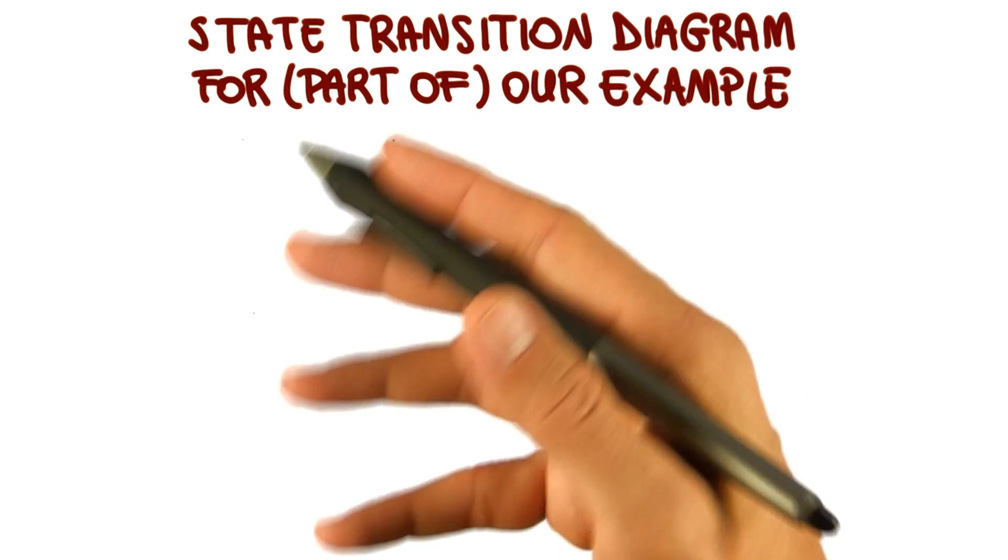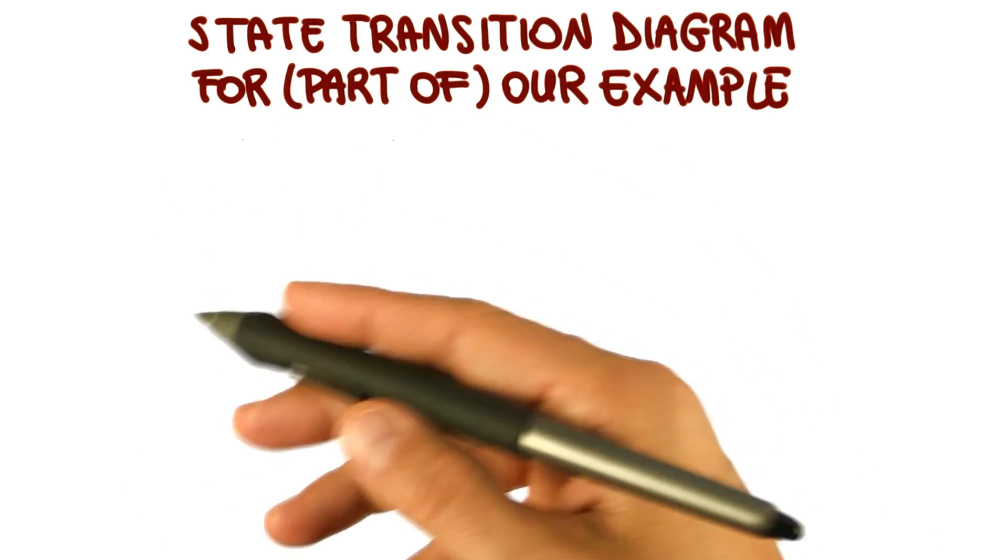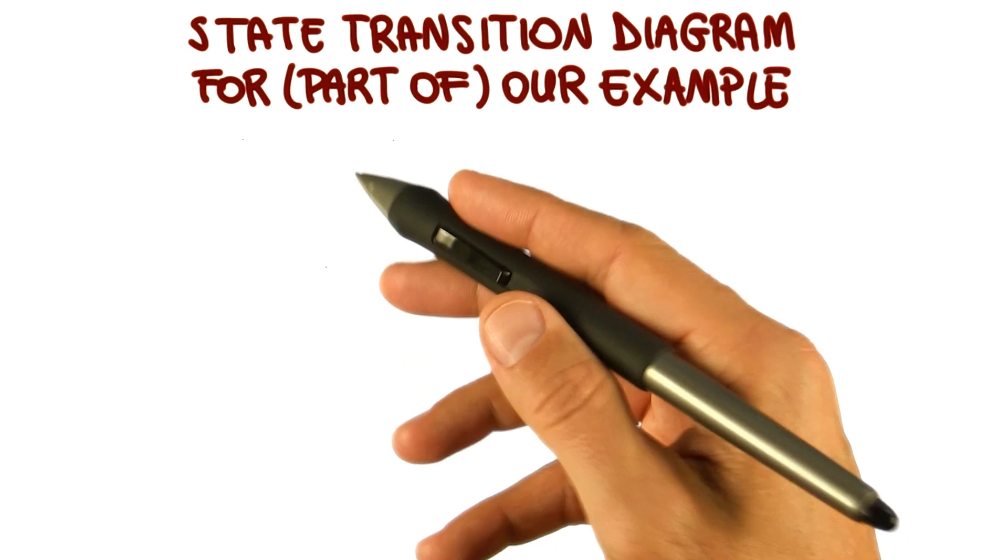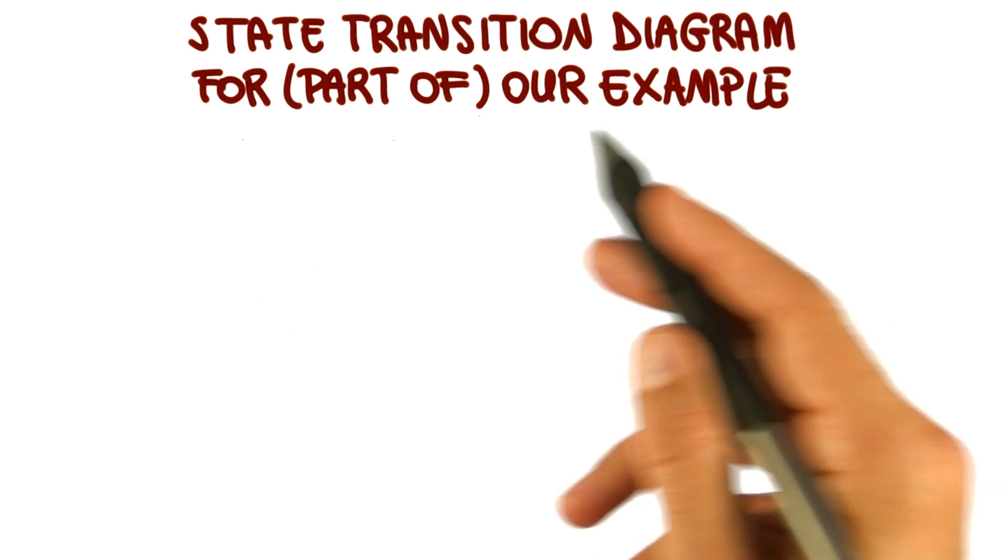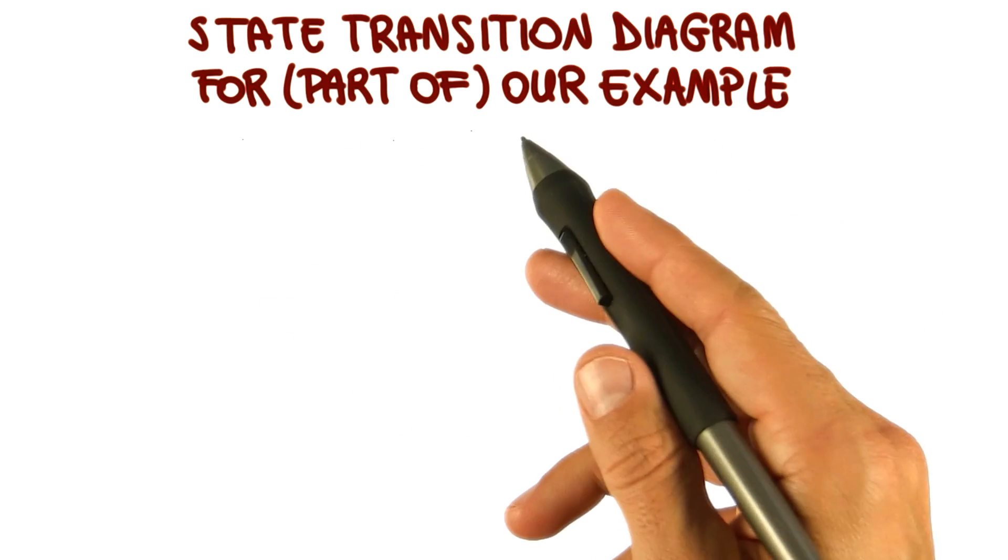As usual, we're going to illustrate this kind of diagram by using an example. In particular, we're going to describe the state transition diagram for part of our example, for part of our course management system.